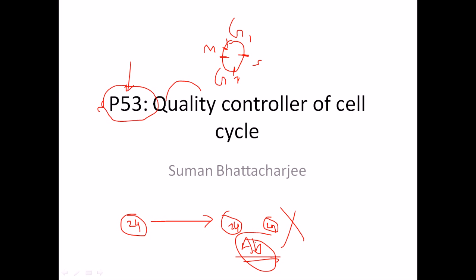The production of abnormal cells creates mutations inside the cell, and these mutations will ultimately lead the cell to death. That is why we need tight control over the cell cycle, ensuring the cell passes properly from one stage to another.